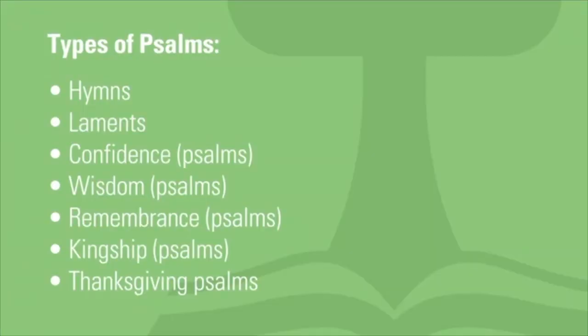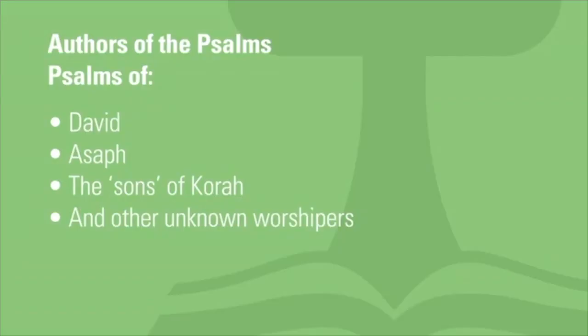Types of Psalms include hymns, laments, confidence Psalms, wisdom Psalms, remembrance Psalms, kingship Psalms, and thanksgiving Psalms — probably the seven main categories. When you're doing your homework, look at the examples and see if you can identify traits of these different kinds of Psalms. As for the authors: about half are by David — 73 out of 150. Asaph is also an author, around a dozen. Another dozen or so are by the sons of Korah. There are also two by Solomon, four by Jeduthun, and one each from Heman, Ethan, and Moses.